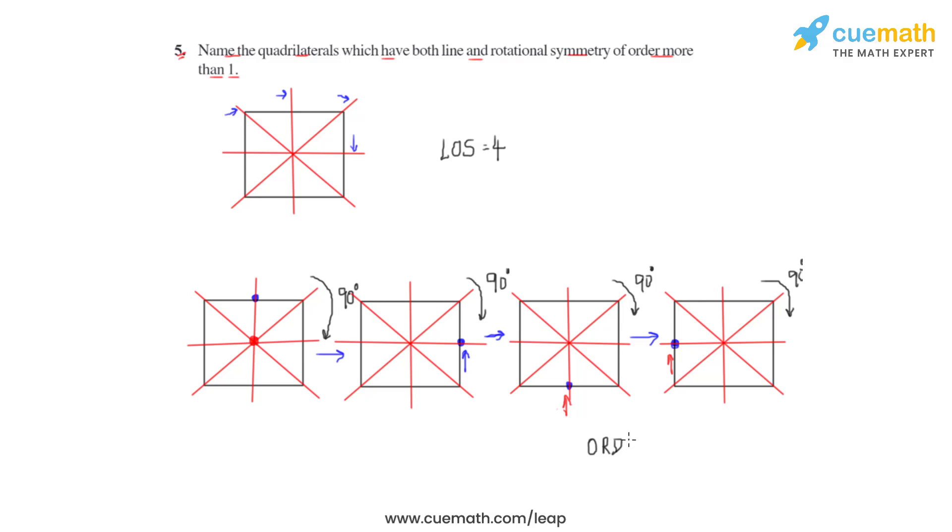We saw how in this particular question if we have taken the quadrilateral to be square, so it had both the line and the rotational symmetry of order more than one. So this is how we are going to answer question number five of this exercise.